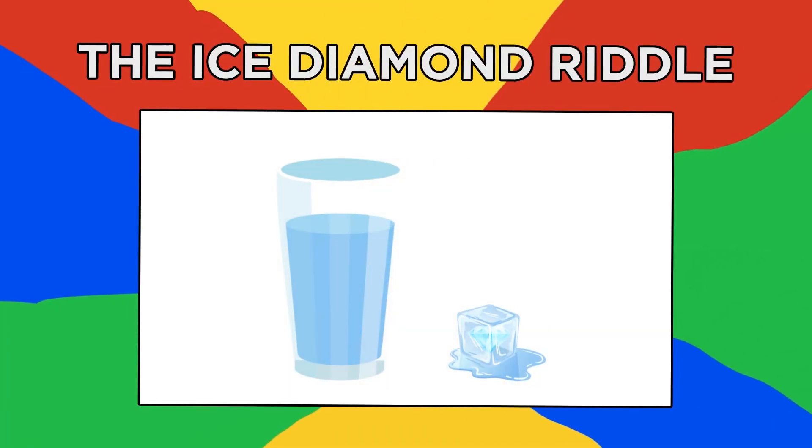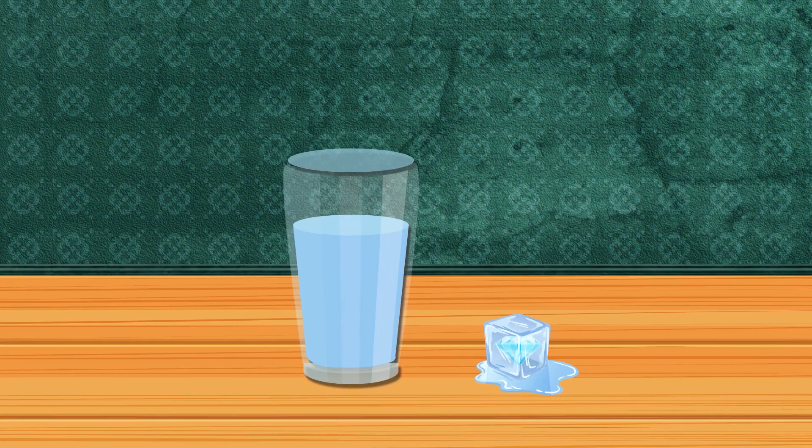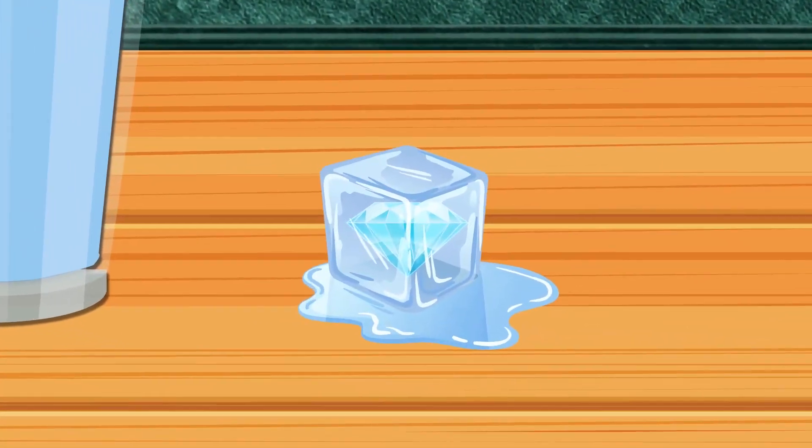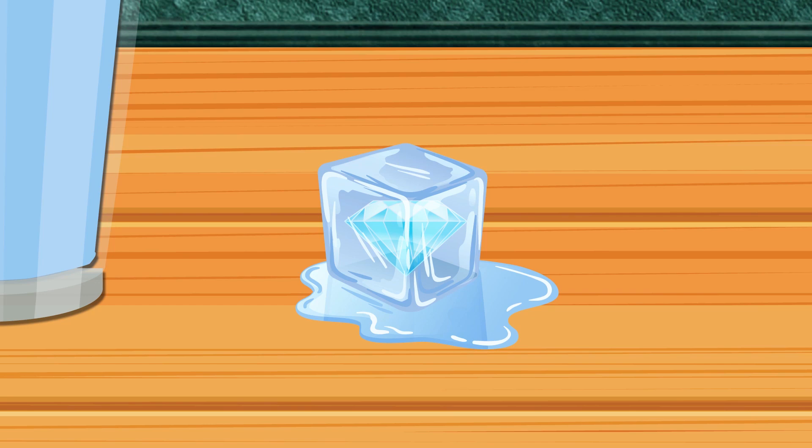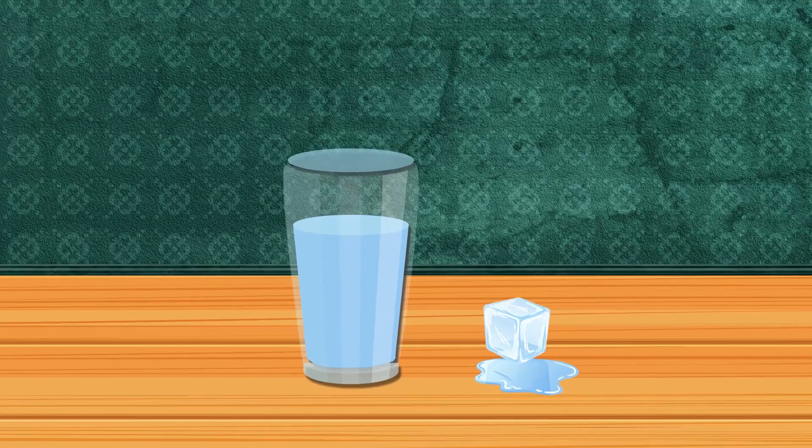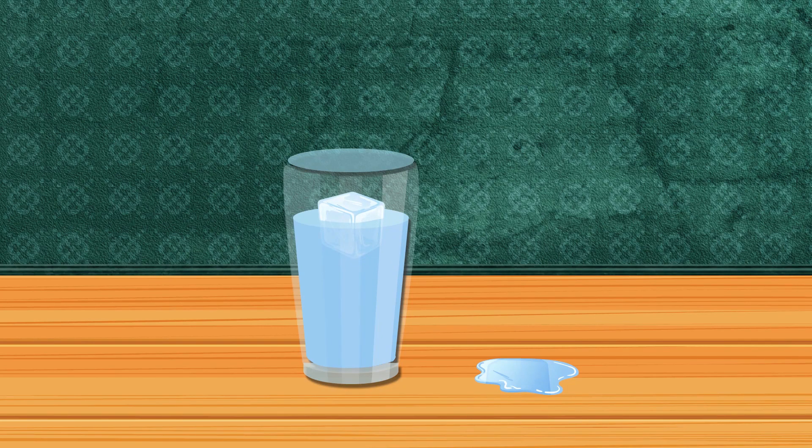Number five, the Ice Diamond Riddle. You've got a glass of water and an ice cube. Now, the ice cube contains a diamond inside, but you don't know because it's looking clear and shiny. Then you drop the ice cube in the glass of water and wait for it to melt.